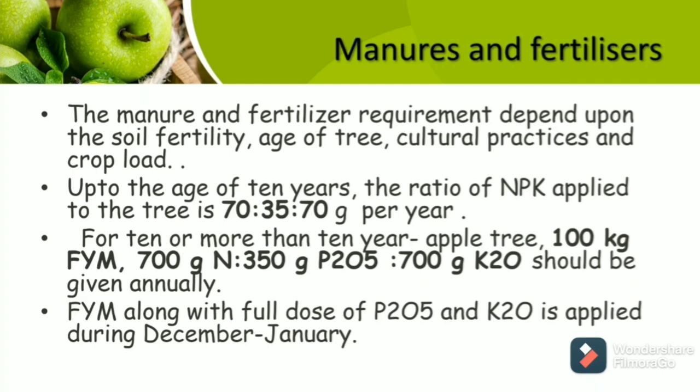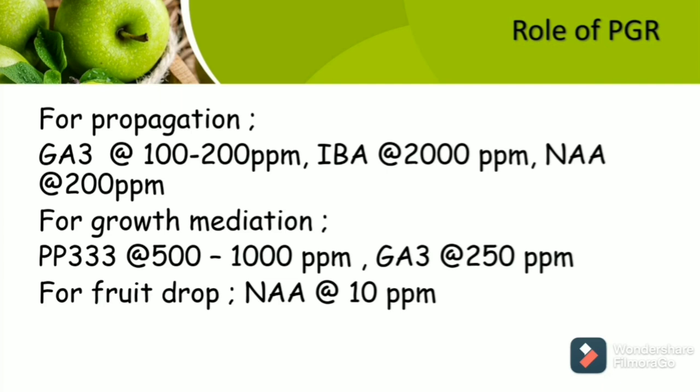The role of plant growth regulators is as follows. For propagation, gibberellic acid GA3 at the rate of 100 to 200 ppm, indole butyric acid at the rate of 2,000 ppm, and naphthalene acetic acid at the rate of 200 ppm is given. For growth retardation purposes, PP333 at the rate of 500 to 1,000 ppm and gibberellic acid GA3 at 250 ppm. For fruit drop purposes, naphthalene acetic acid as foliar spray is given at 10 ppm concentration.